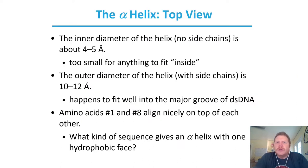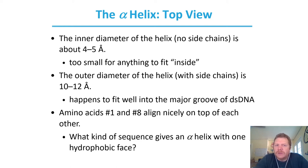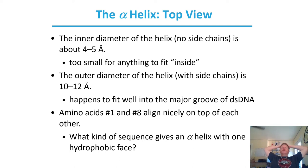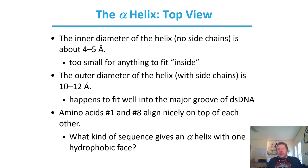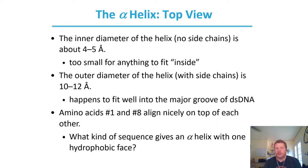The inner diameter of the alpha helix — without any side chains — is four to five angstroms, so basically nothing can fit inside. If you think about a carboxylic acid, the R group of something like aspartic acid or glutamic acid is not going to fit into that helical space inside that helix.